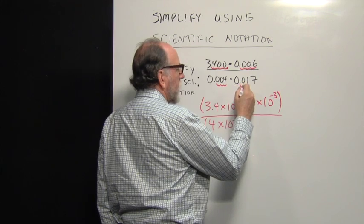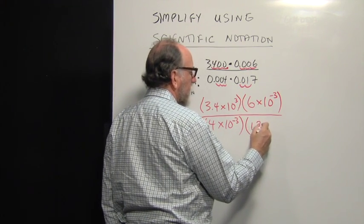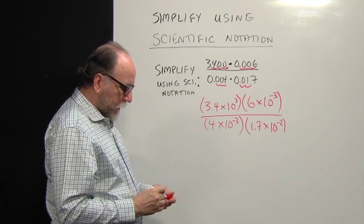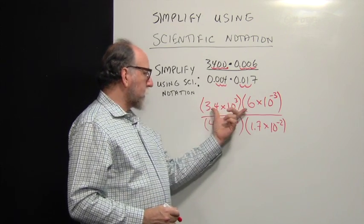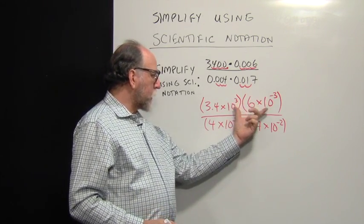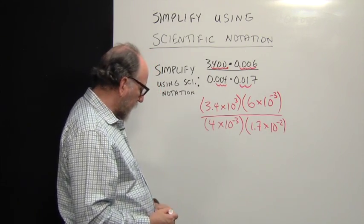And then this one moves two places. We get 1.7 times 10 to the negative 2. So the advantage of this is that we can now multiply these smaller numbers together and deal with the exponents separately. It makes it a little simpler in the long run.